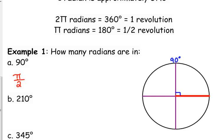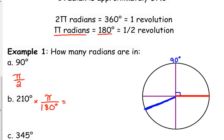For example, 210 degrees — you may not know exactly where to put it, but it's more than 180, so it's about right here on the circle. That's not a nice fractional part we can logic through, so we use the relationship that pi radians equals 180 degrees. Like in chemistry when converting, put what you want to get rid of on the bottom — we want to get rid of degrees, so we put pi on top and 180 degrees on the bottom. 210 and 180 are both divisible by 30, giving us 7π over 6.